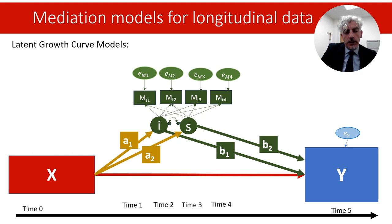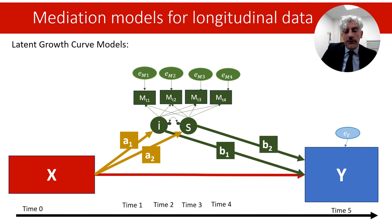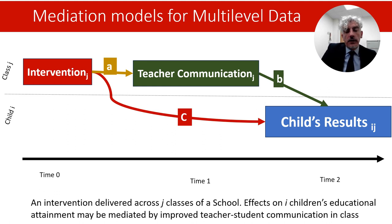The use of structural equation models also allows integration of other types of models into mediation analysis. For example, if the mediator is observed over repeated periods of time, we can use latent growth curve models to estimate the intercept and slope — the initial status and the rate of change. These parameters representing change in the mediator over time can then be included in the mediation model to test whether changes in the mediating variable transmit some of the effect of the independent variable on the outcome. I also refer to resources I have created for the National Centre for Research Methods on latent growth curve models.